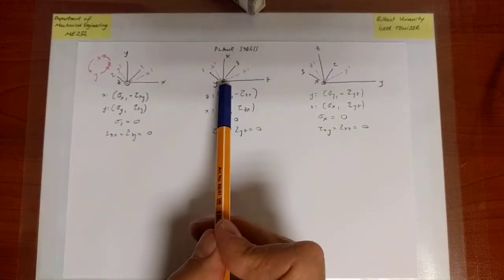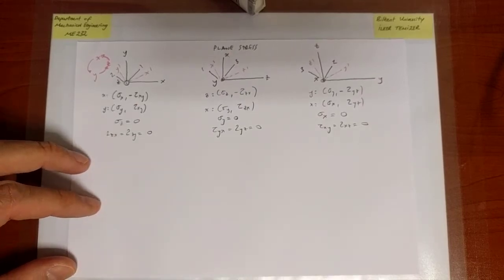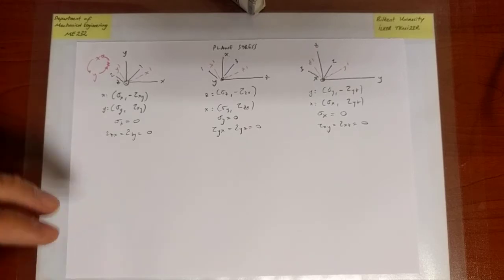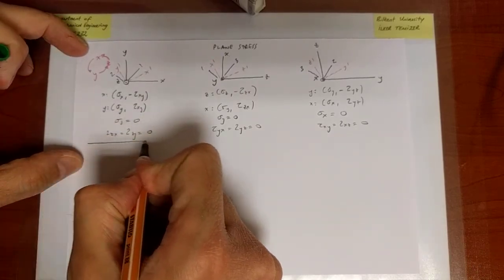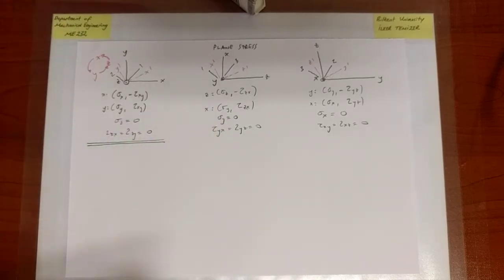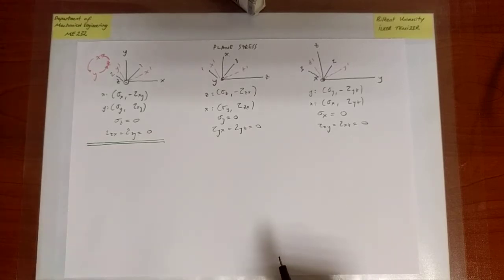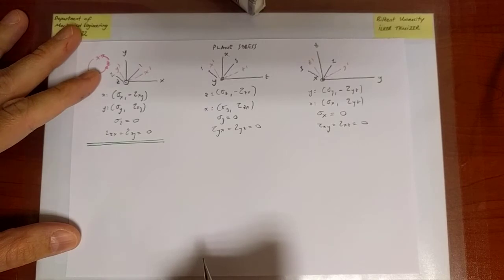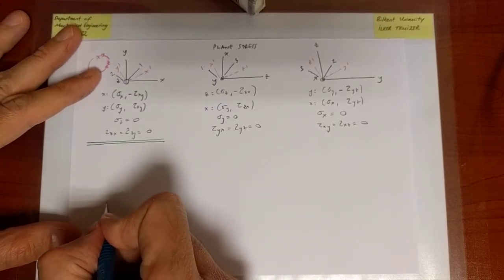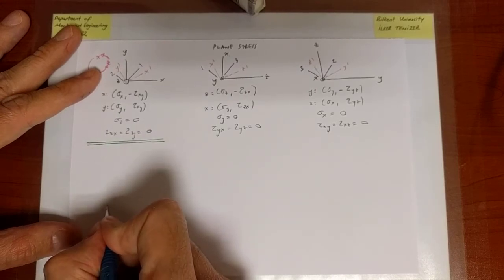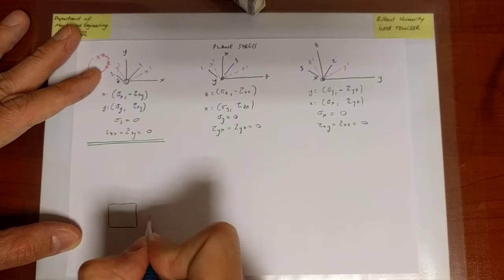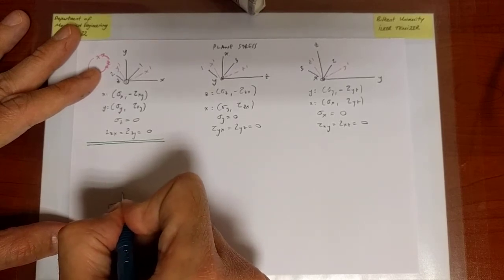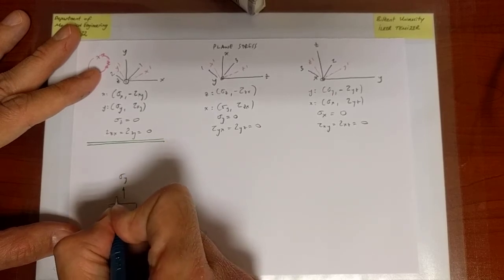Let me make our default choice and highlight it: our default is the original XY setup that we've stuck with. Now I'm going to generalize this picture. Starting from our default picture, we had a state of stress with sigma_X, sigma_Y, and tau_XY indicated on the element.